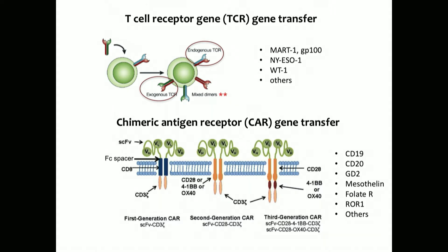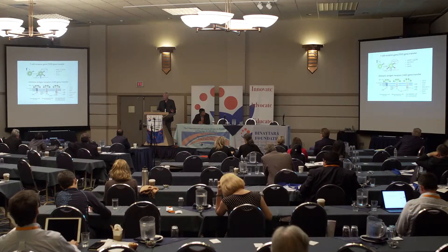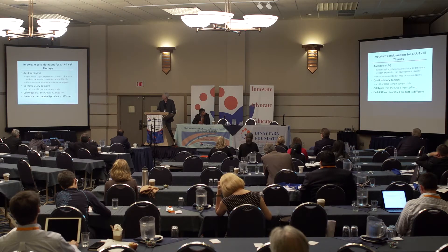I'm going to show you mostly data with CD19 today because that's where all the action is, and that's where the first approval for this product is going to be later this month, likely for childhood ALL and adult ALL by Novartis, followed by KITE for diffuse large B-cell lymphoma, probably by September. We're also now getting this into solid cancers, with a trial in lung cancer and breast cancer targeting an antigen called WAR-1. But I'll really focus on lymphoma.